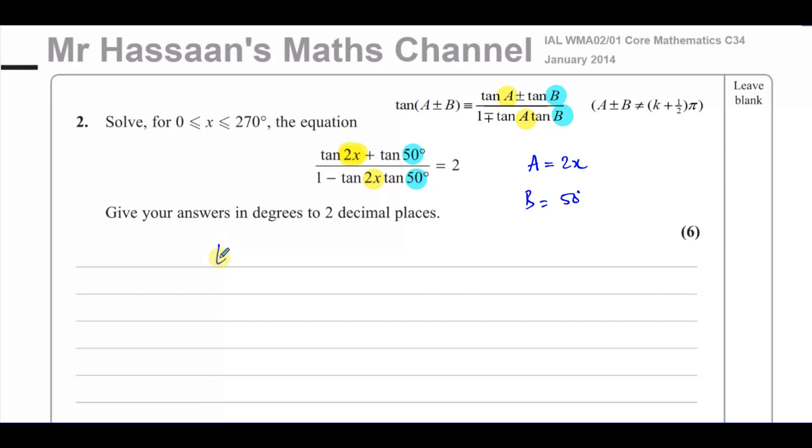So we can rewrite this using this as the tangent of 2x plus. There's a plus there, so the form of tan A plus tan B over 1 minus, there's going to be a plus between them. So 2x plus 50 degrees is equal to 2.